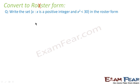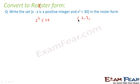Here it says x is a positive integer and x² is less than 30. First, what are the positive integers? As we discussed, 0 is not a positive integer, so we have 1, 2, 3, 4, 5, 6, and so on. Now let's check each: 1² = 1 < 30 — true. 2² = 4 < 30 — true. 3² = 9 < 30 — true. 4² = 16 < 30 — true. 5² = 25 < 30 — true. 6² = 36 < 30 — no.